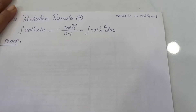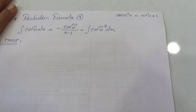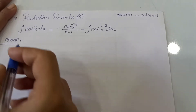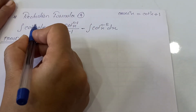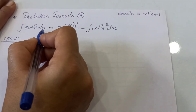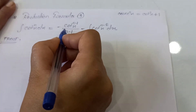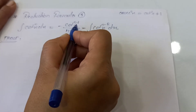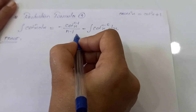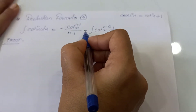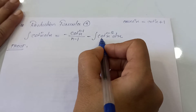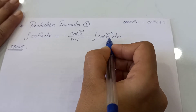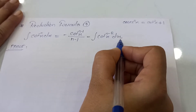So let's start with the reduction formula. It is basically: integration of cot raised to n times x dx equals minus cot raised to n minus 1 upon n minus 1, minus integration of cot raised to n minus 2x dx.